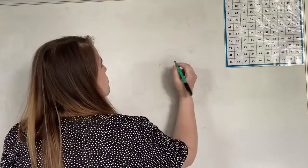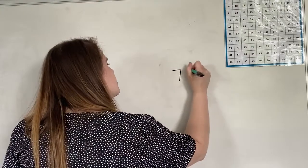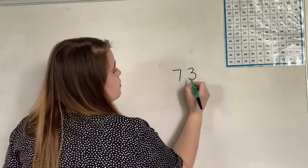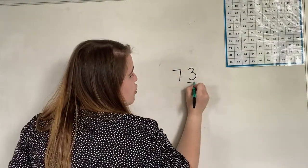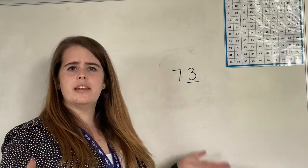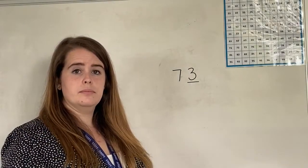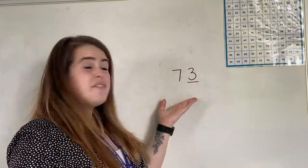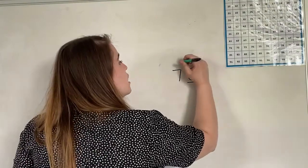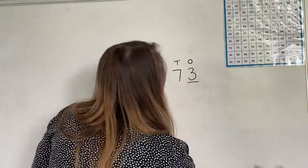I'm going to choose the number 73. If I was to underline the number 3, what is the value of this number? The value is just 3 because it is in the ones column.